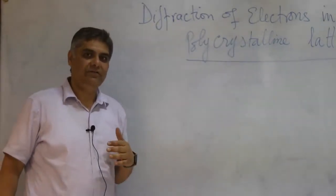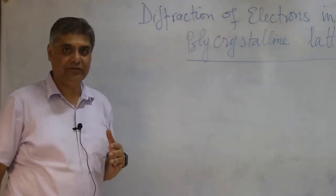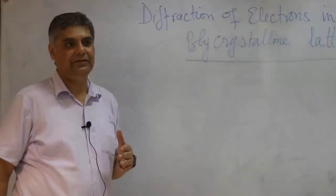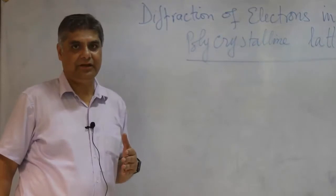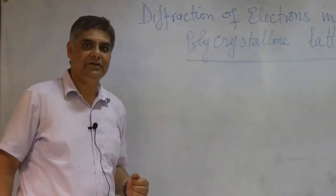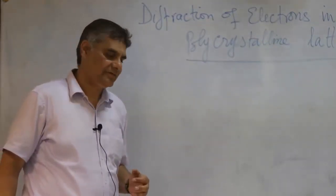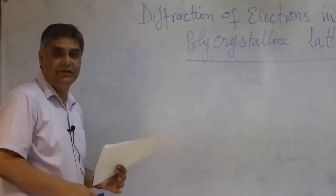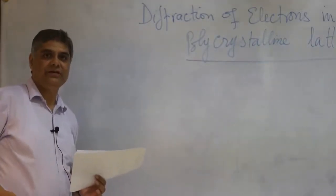A photon behaves like a wave and it behaves like a particle as well on some occasions. De Broglie in 1924 generalized this hypothesis for matter waves as well.